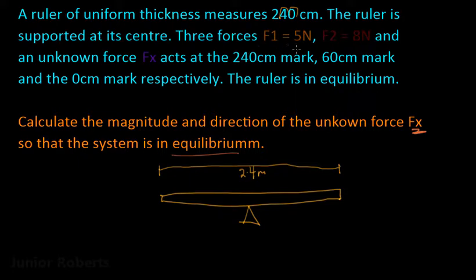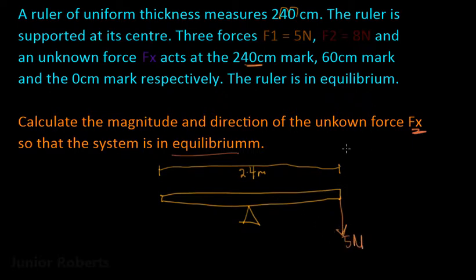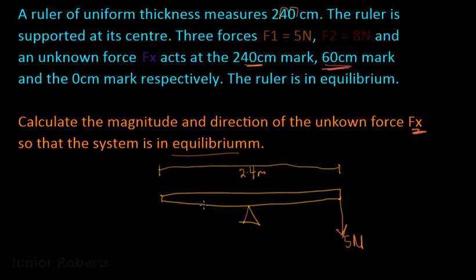We're told that force F1 of 5 newtons is acting at the 240 centimeter mark, that is the 2.4 meter mark — so we place F1 right there. We also have force F2 of 8 newtons acting at the 60 centimeter mark, or the 0.6 meter mark, which is about halfway between zero and the midpoint. And our unknown force Fx is acting at the zero centimeter mark.